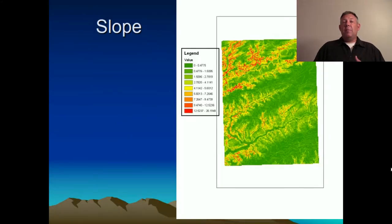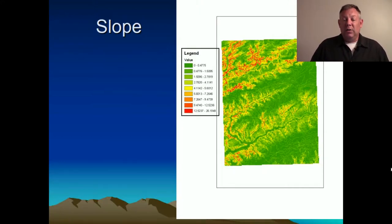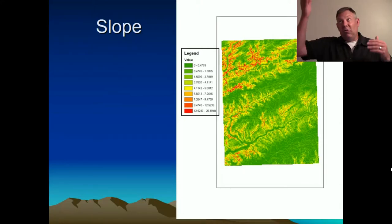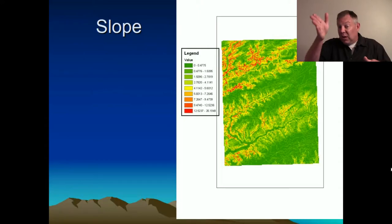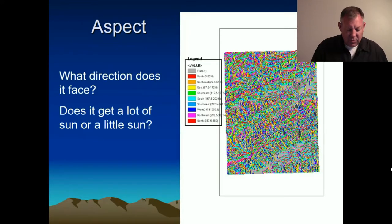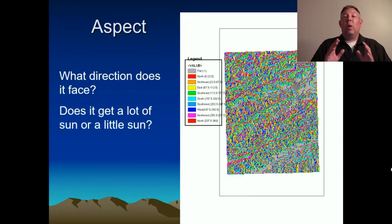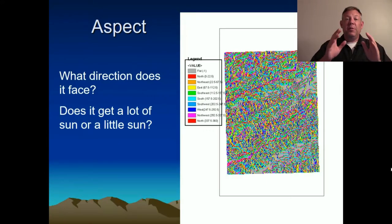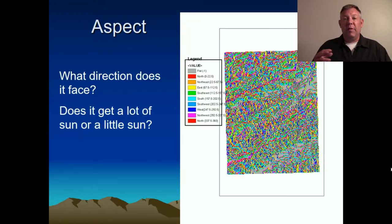Here's another physical map the software produces: slope, again using elevation. It can tell you how steep or flat an area is — sometimes the change in elevation matters more than the actual elevation itself. From the same data we can also derive aspect, which is the direction any point faces. Areas facing south get more sunlight, areas facing north get less, and you can determine whether terrain faces into or away from prevailing winds.